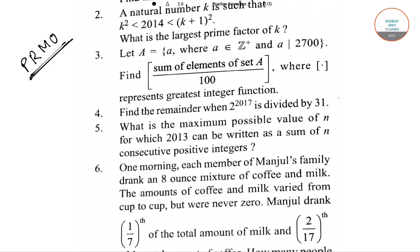First we will go to question number four. Question number four says: find the remainder when 2 to the power 2017 is divided by 31. To solve this question, we have to know a basic theorem — the theorem given by Fermat.